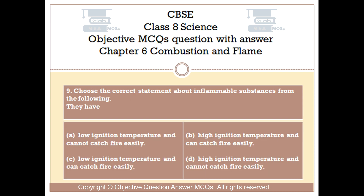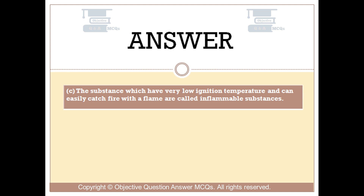Question number 9: Choose the correct statement about inflammable substances from the following. They have — Option A: low ignition temperature and cannot catch fire easily. Option B: high ignition temperature and can catch fire easily. Option C: low ignition temperature and can catch fire easily. Option D: high ignition temperature and cannot catch fire easily. The right answer is Option C. Substances which have very low ignition temperature and can easily catch fire with a flame are called inflammable substances.